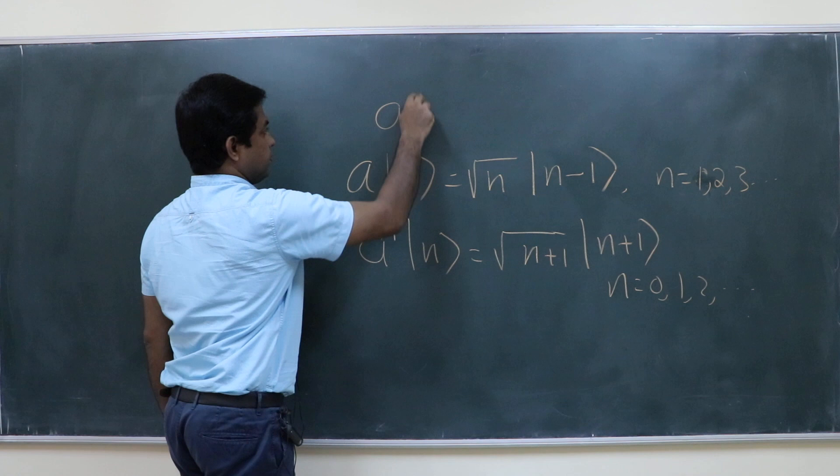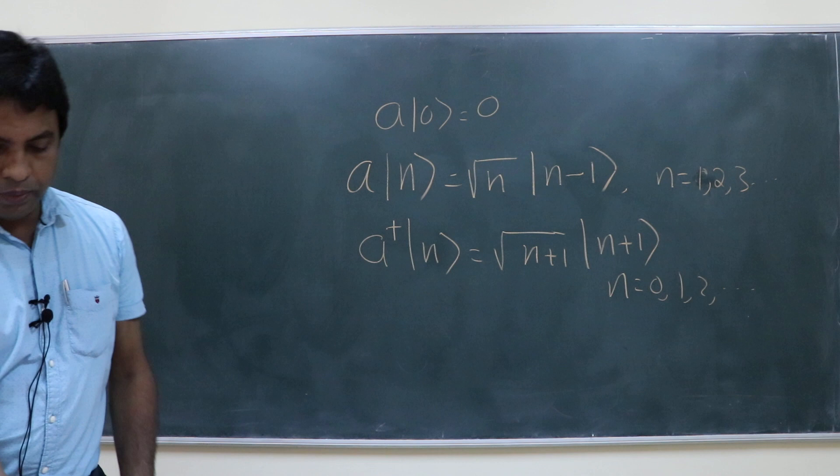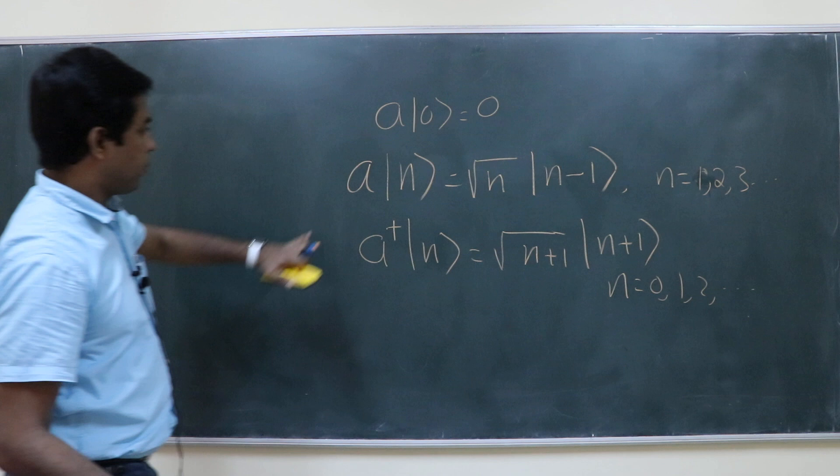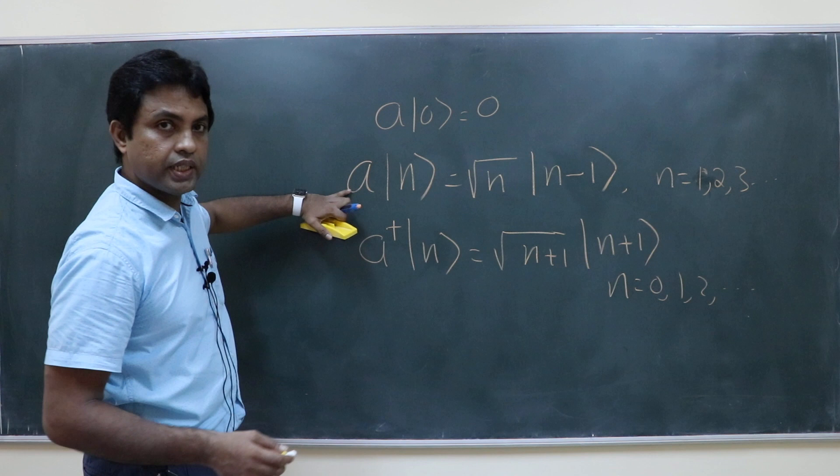What about a acting on ket 0? That is 0. These things you already know. Now, to find out the matrix elements of this operator a and a dagger — that is our idea.